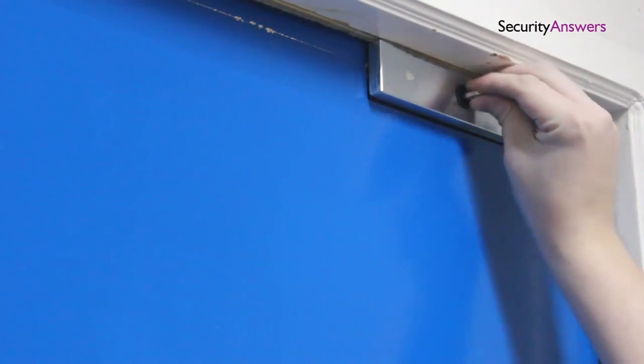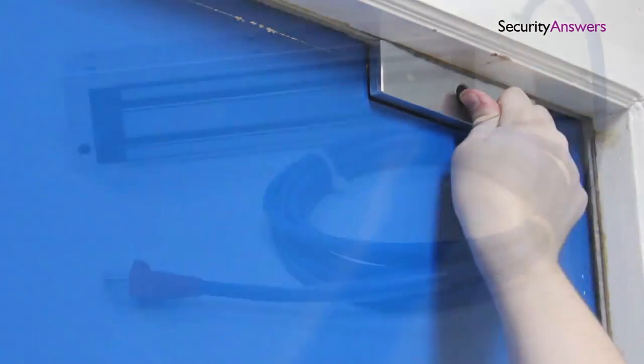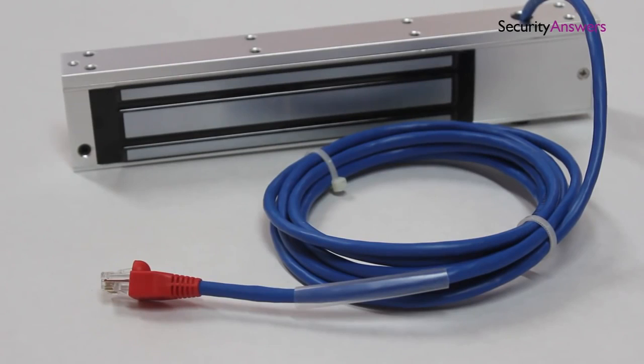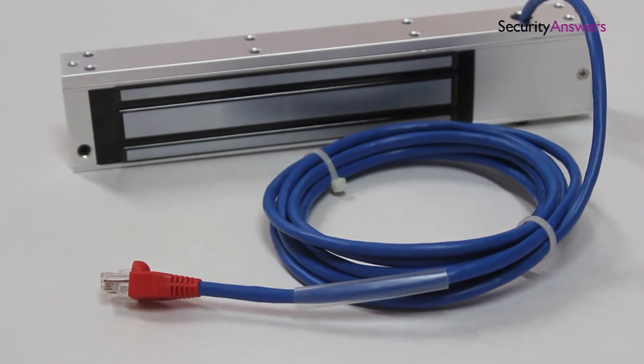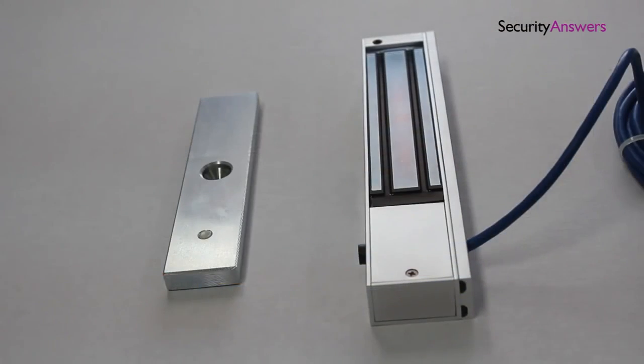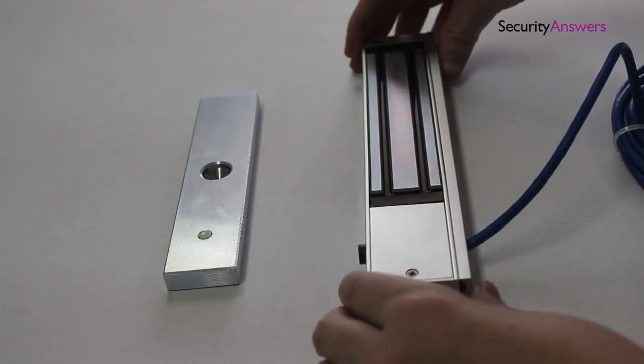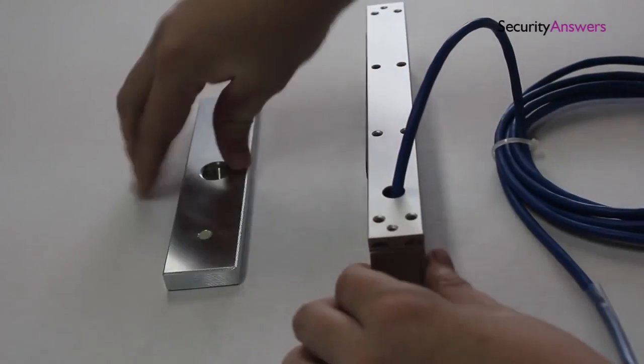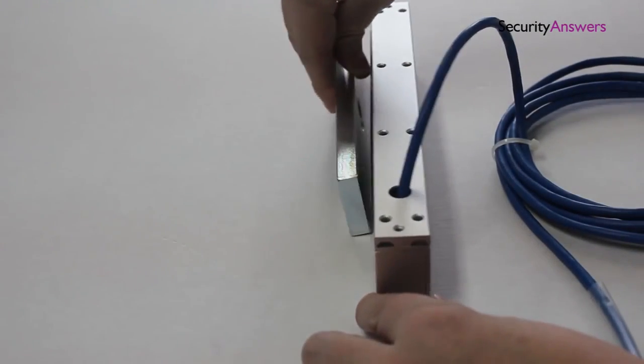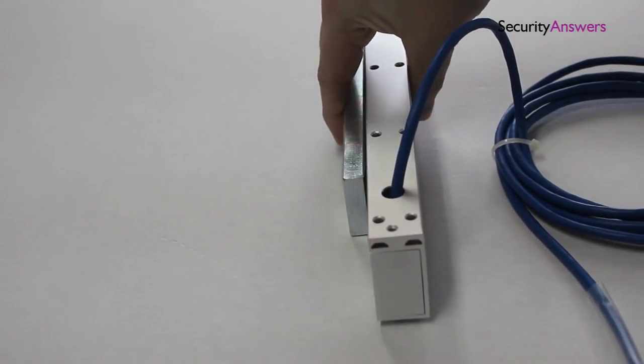Now that we have completed one half of the mechanism, it's time to move on to the EM lock, which should be installed on the door frame. In order for an EM lock to function, it's extremely important that a thorough connection is made between the two magnets. So take extra care when marking off the area for a second device to guarantee correct alignment.